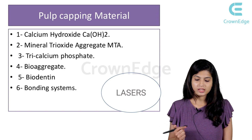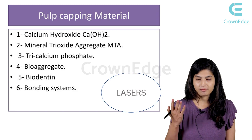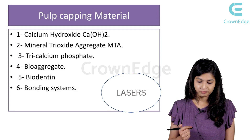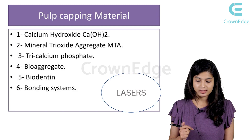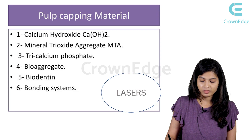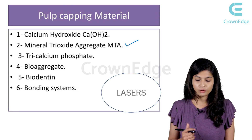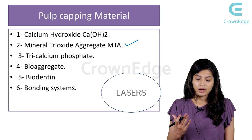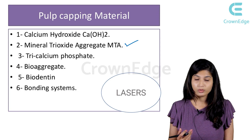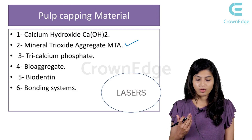Calcium hydroxide is the most common pulp capping material, but there are many other materials used for pulp capping. MTA is a great material and nowadays is pretty commonly used for the pulp capping procedure. Other materials include tricalcium phosphate, bioaggregate, biodentin, bonding systems, and nowadays lasers are also used for pulp capping.